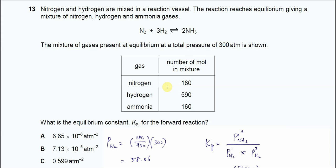Question 13. Nitrogen and hydrogen mix to form ammonia gas. This is the Haber process.